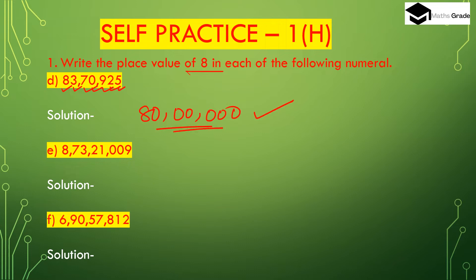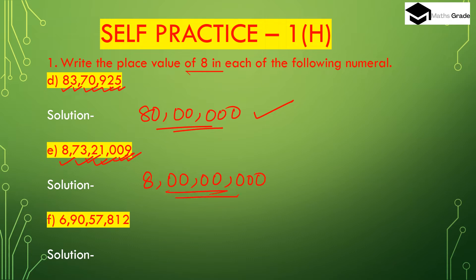Now part (e): 8,73,21,009. Here the digit 8 is in the crores place — units, tens, hundreds, thousands, ten-thousands, lakhs, ten-lakhs, and crores place. So the place value of 8 is 8 crore.